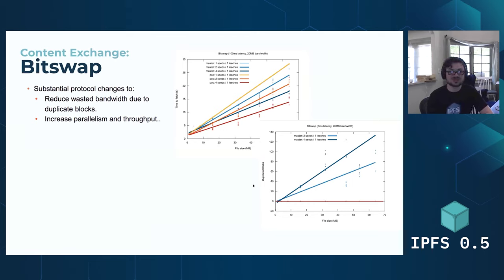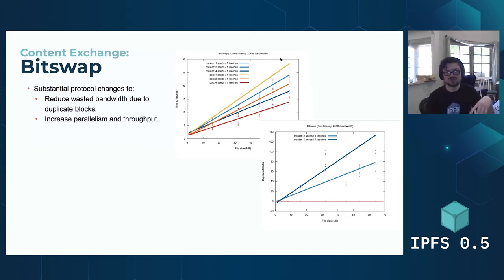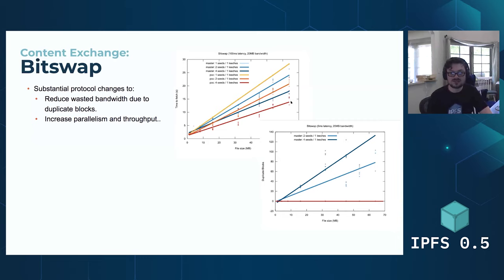If you look at the top graph, the top line here is with basically one person serving data and one person fetching data — in both the old version and the new version, same speed. But as you go down, you can see this bottom red line — that's with four people serving data and one person fetching data. You can see that it is much faster than this blue line here, which is in the old release. So it's about 30% faster, at least in this graph. Basically, we massively increased the parallelism in BitSwap and reduced the duplicate blocks.